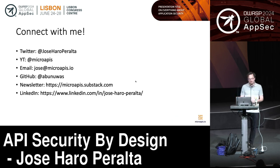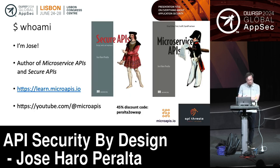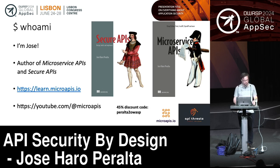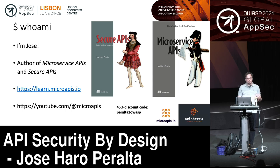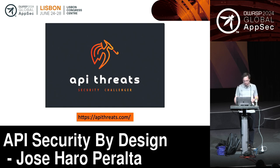If you want to get in touch, the best way is on LinkedIn. If you want to grab a copy of either book, there's a 45% discount code on the slides — Peralta2 or Wasp. I also have 10 e-books of Secure APIs and 5 e-books of Microservice APIs to give away for free. Connect with me on LinkedIn or send me an email, tell me you're connecting from the Wasp conference, and I'll include you in the giveaway.